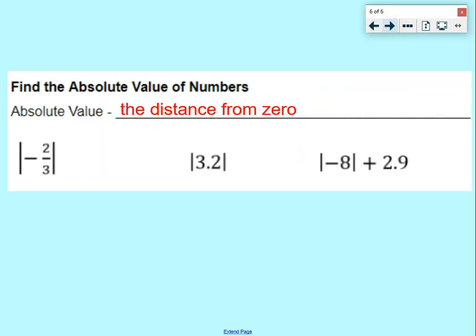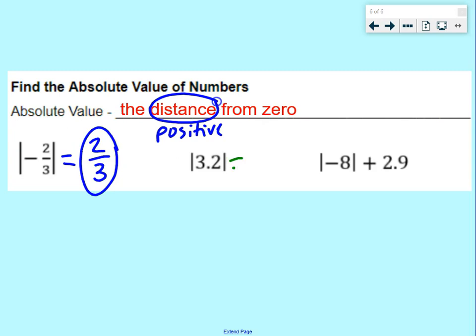Last piece here is absolute value. Absolute value is the distance from 0. Distance means it's always going to be positive. We only have positive distance. So negative two-thirds, that negative inside makes it a positive two-thirds. 3.2, absolute value of 3.2 is just 3.2. It's 3.2 units away from 0. Last one: absolute value of negative 8 is positive 8 plus 2.9. We do 8 plus 2.9 and we get 10.9.